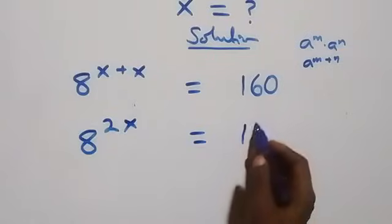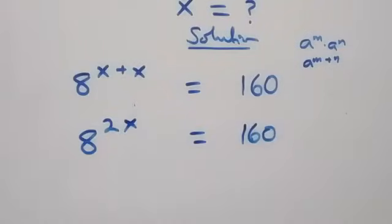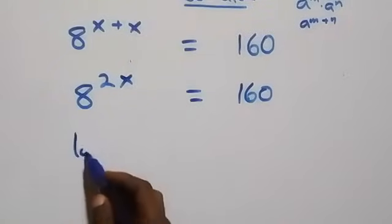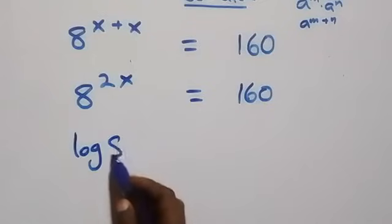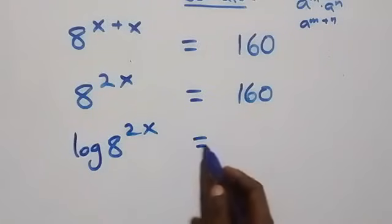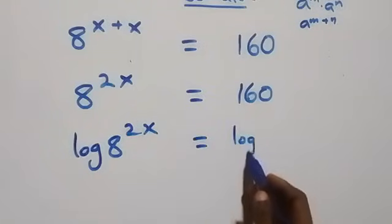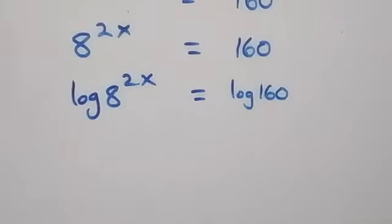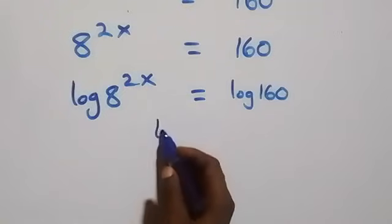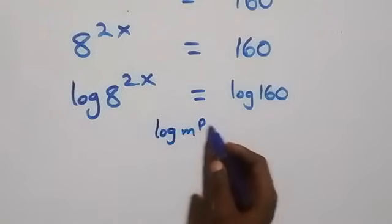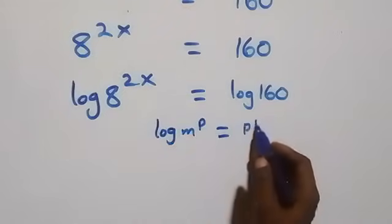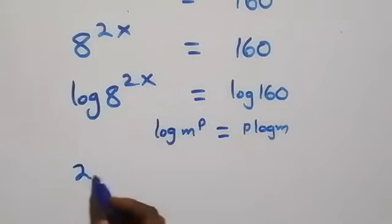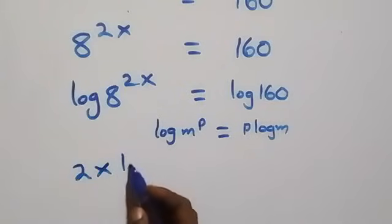On this side, the next step: we take the log on both sides. That is, we have log 8 raised to power 2x equals to log 160. From here, the next step we apply the power rule of logarithm: when we have log m raised to power p, it is the same thing as p log m. That is what we have here becomes 2x log 8.